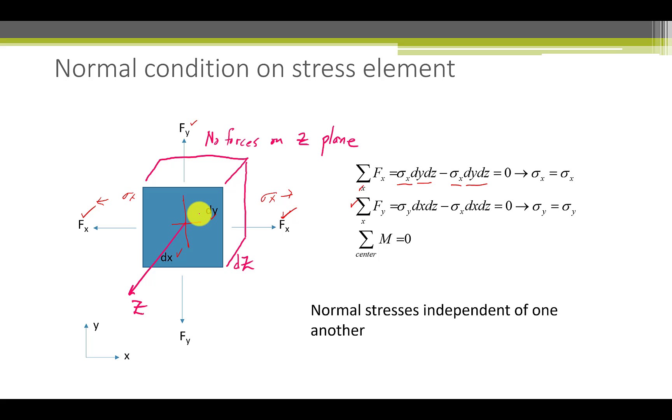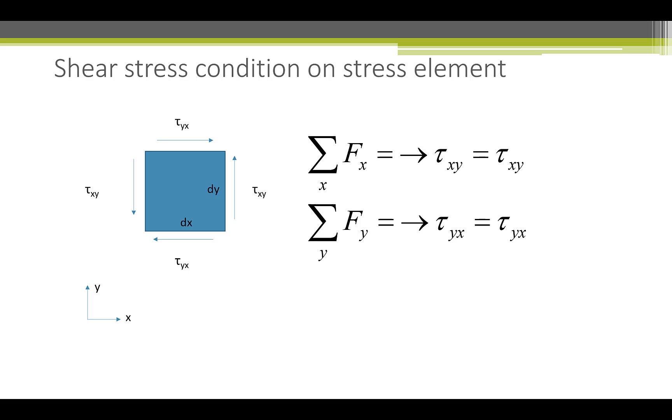F sub x has no effect or influence over F sub y and vice versa. We will again borrow the basic ideas from statics to consider shear stresses on a shear element. If we sum the forces in the x-direction, we have that tau xy will be equal to tau xy. If we do the similar summing in the y-direction, we also have that tau yx is equal to tau yx. This shows that stresses on opposite sides of the cube must be equal.